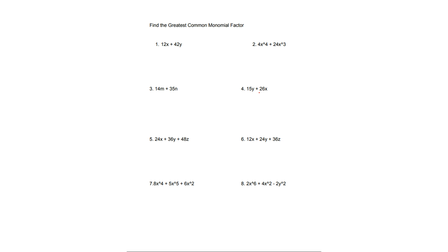For this next part, we need to find the greatest common monomial factor. A monomial is just one term. So just like the greatest common factor, it just means one term. For number 1, the greatest common monomial factor would be 6.